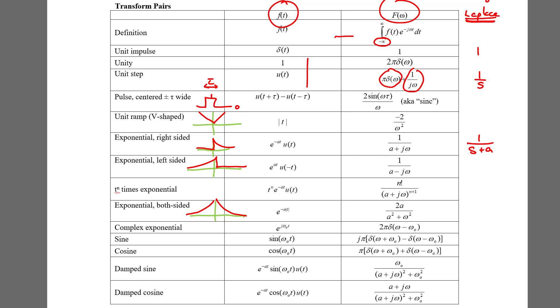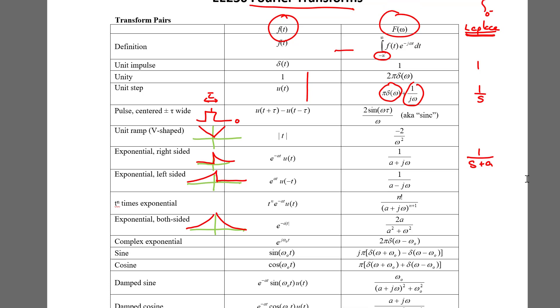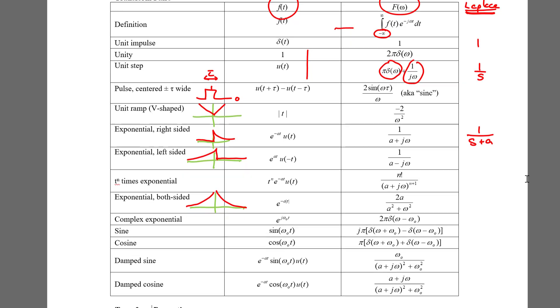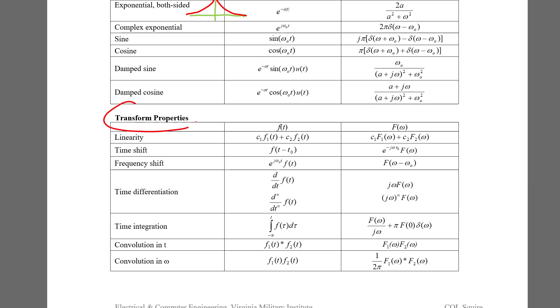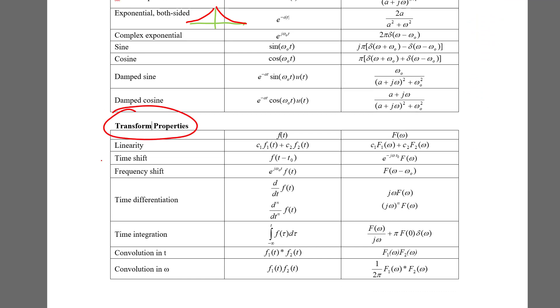Now these transform pairs, just like Laplace transforms, are relatively limited, and there exist a great many functions which have Fourier transforms that don't appear in this particular graphic. To help you change an arbitrary given waveform into one of these transform pairs, you can use these transform properties. These Fourier transform properties are very similar to the properties you've already studied with Laplace transforms.